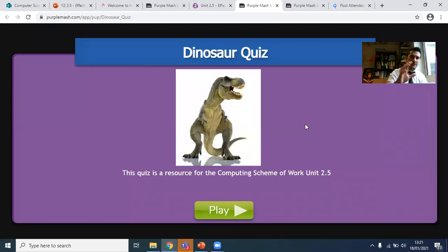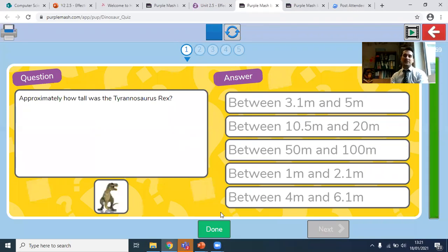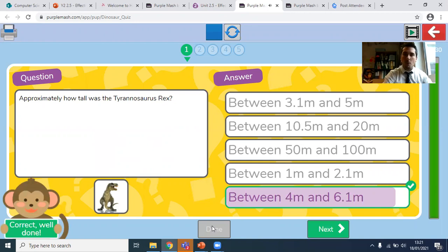Now, only once you've got that information is it worth clicking on the quiz, and you can then click on play, and it will take you through to these questions. So based on your information, approximately how tall was the Tyrannosaurus rex? Have a look through what you found out. Did you type in approximately and how tall Tyrannosaurus rex? Was that the question you put in your search bar? Because I found out what I think it was in terms of how tall it was. I want to see if I was correct.